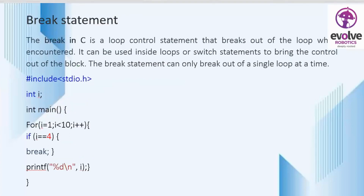The next statement is the break statement. The break in C is a loop control statement that breaks out of the loop when encountered. It can be used inside loops or switch statements to bring the control out of the block. The break statement can only break one level of the loop. Here we can see an example program: inside the main function there is a for loop, and an if condition is given inside it. When the value of i becomes four, the loop breaks, and the output prints the numbers one to four.